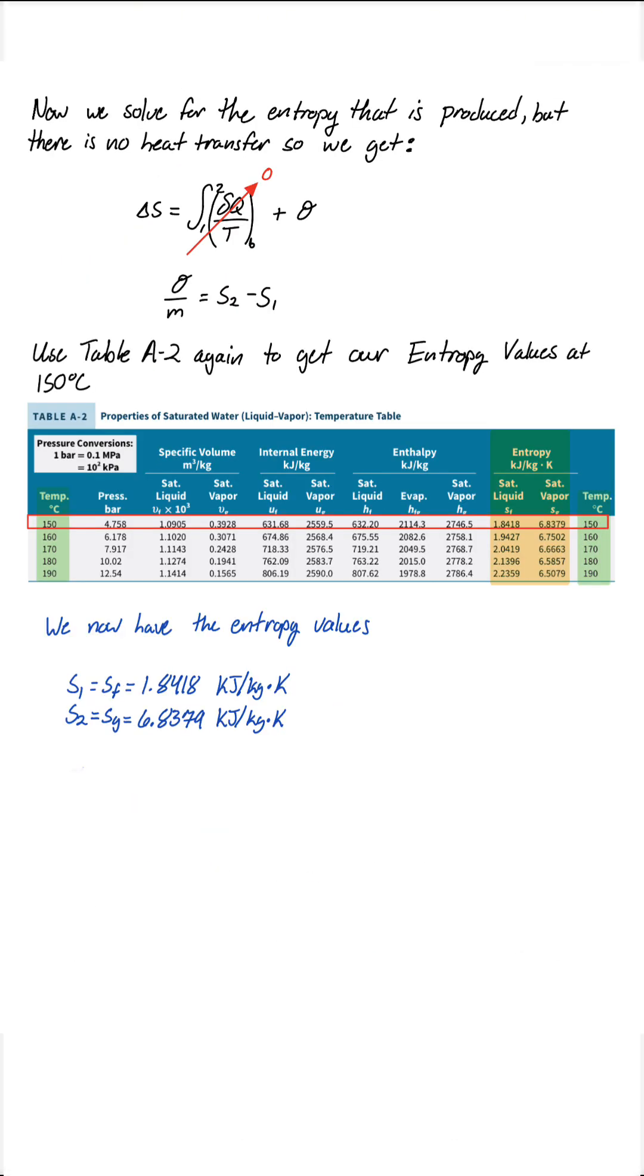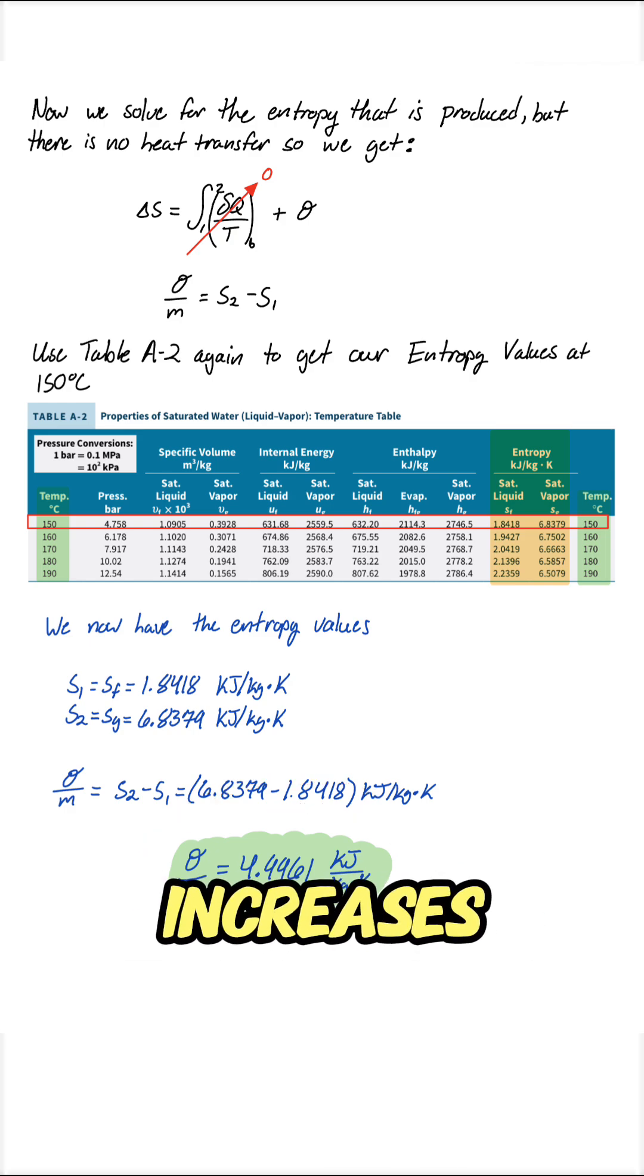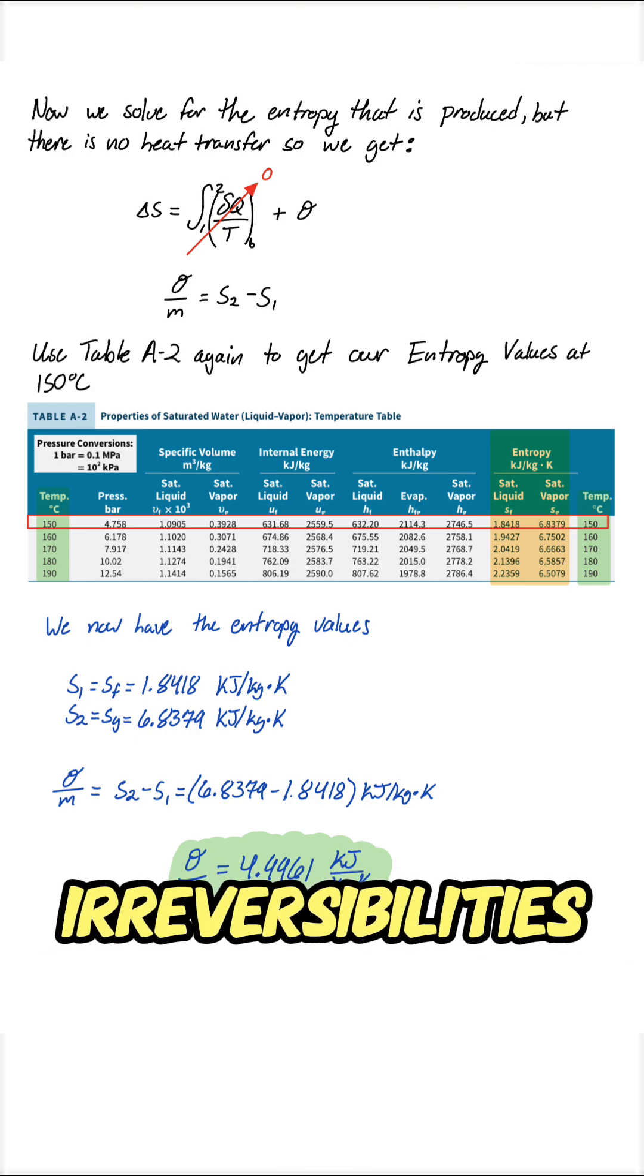For entropy production, we calculate the difference between the entropy values of saturated vapor and saturated liquid. That comes out to about 4.95 kilojoules per kilogram Kelvin. Unlike the reversible case, entropy increases because of irreversibilities like fluid friction.